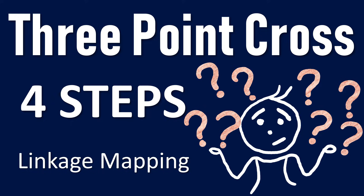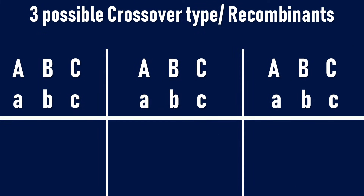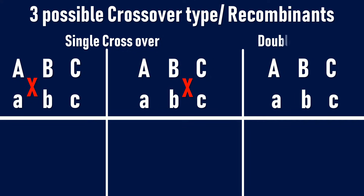Let us learn how to solve a three-point linkage cross using four simple steps. With three genes, there are three possible crossover types or recombinations that can take place. Let's take the example of two parents: capital ABC and small ABC type. A single crossover can happen between genes AB and genes BC, or a double crossover can happen between genes AB and BC.